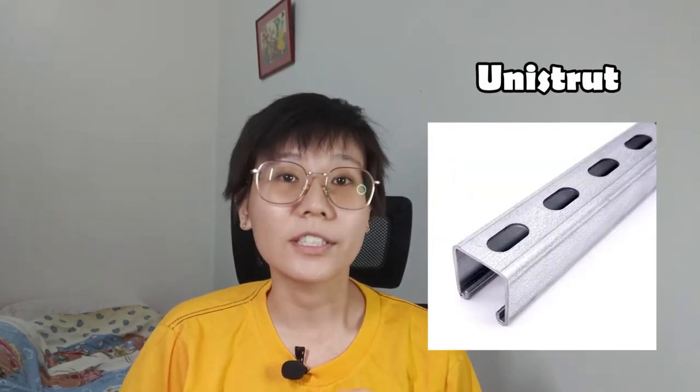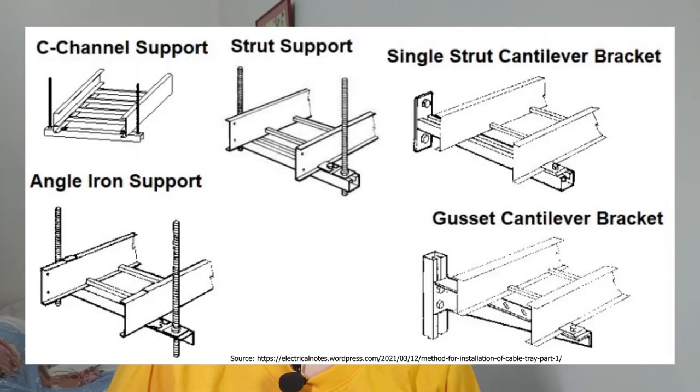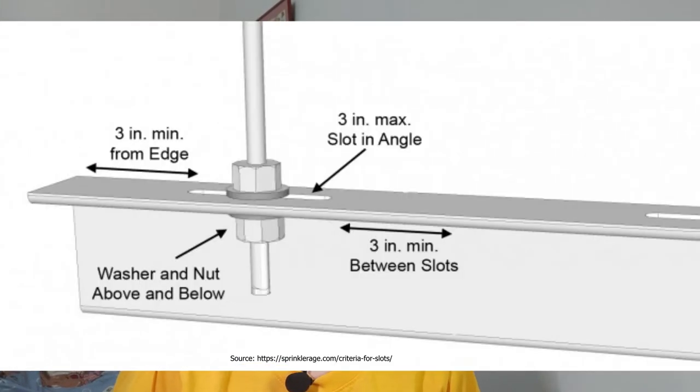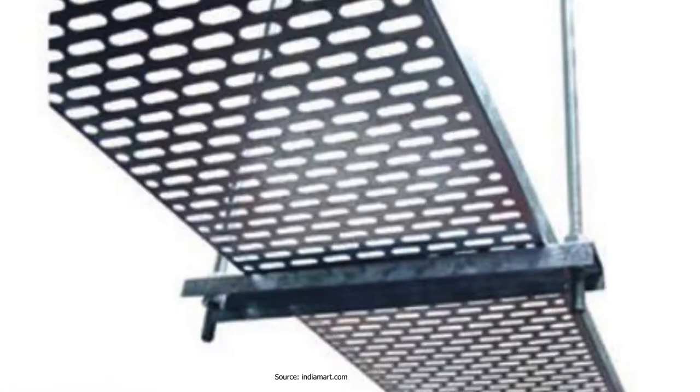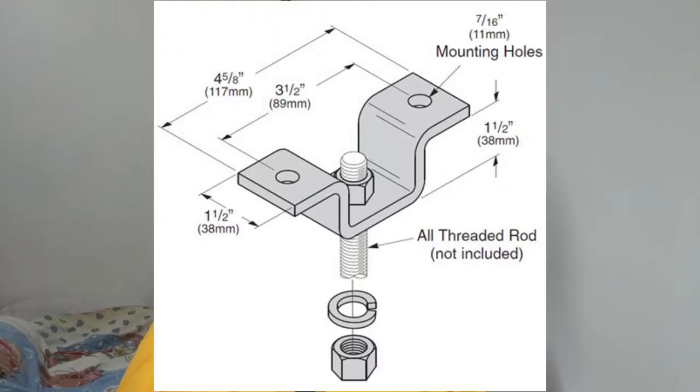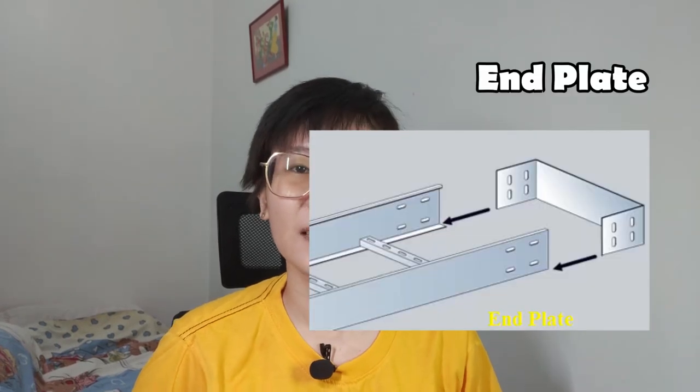There are several types of struts used to hold the cable containment in place. For instance, these include the angle iron, C-struts, uni-strut, or even cantilevers. It is very important to know the method of installation and get the method of installation approved by your client or consultant before proceeding with the works.